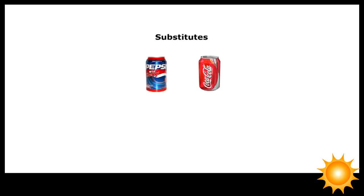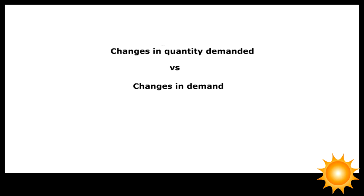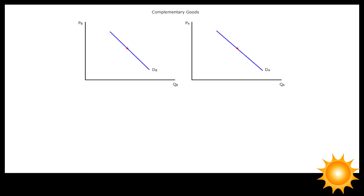Complements and substitutes are good examples to illustrate the difference between changes in quantity demanded versus changes in demand. Here we have the demand curves for two complementary goods A and B.